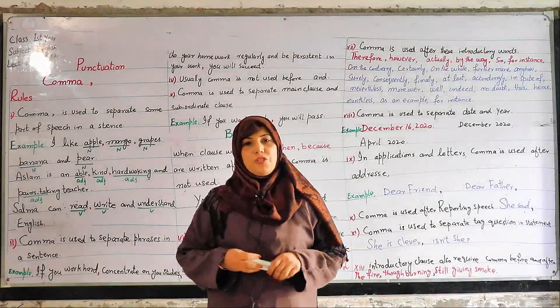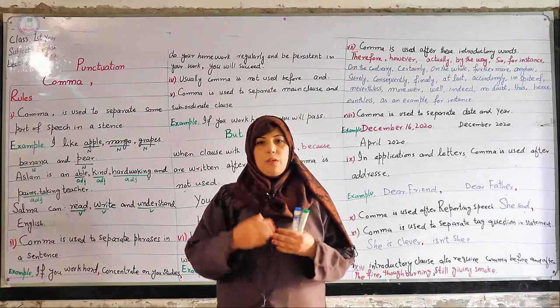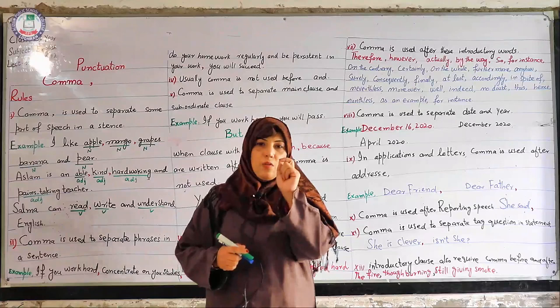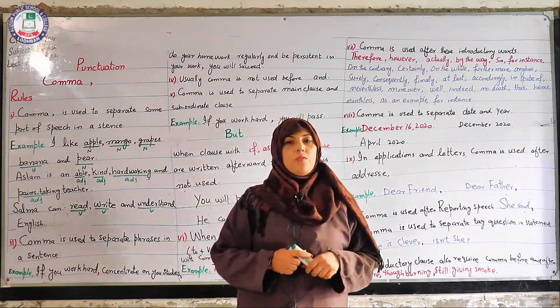Our topic is punctuation. We are continuing the rules about punctuation. We have read about the full stop, comma, sign of interrogation, sign of exclamation, use of capital letter and apostrophe. Today our topic is comma. How to use comma in a sentence? What are the rules about the use of comma in English grammatical sentences?